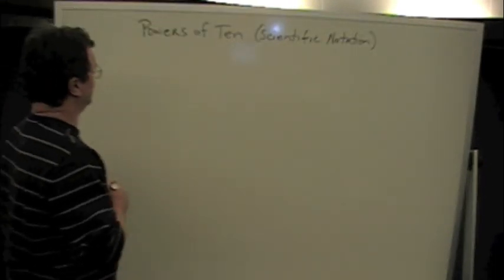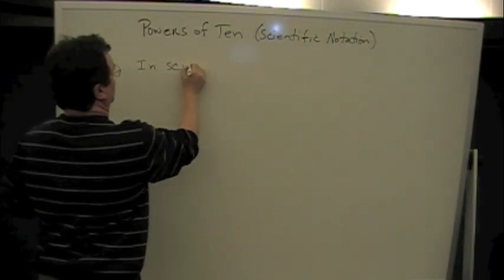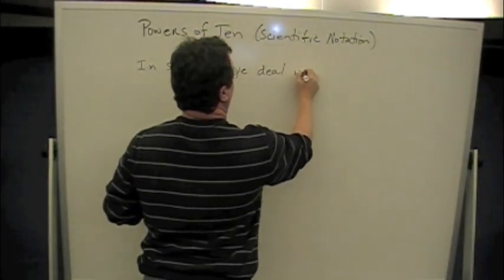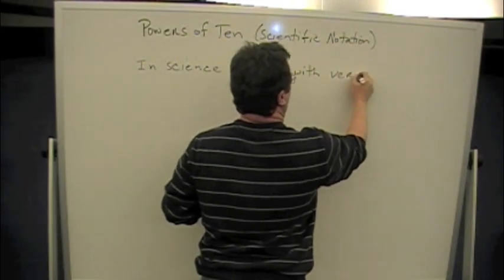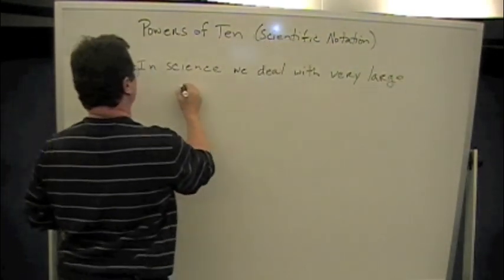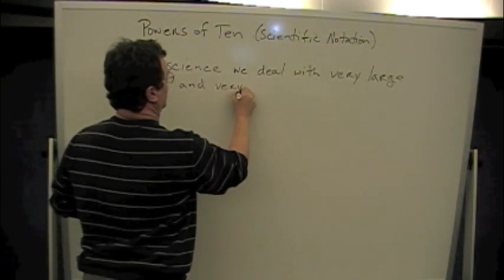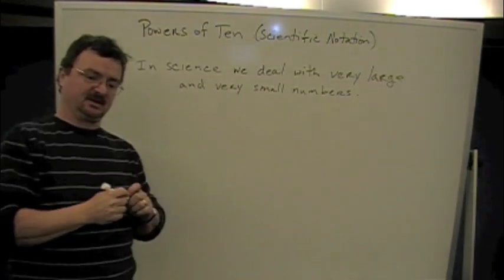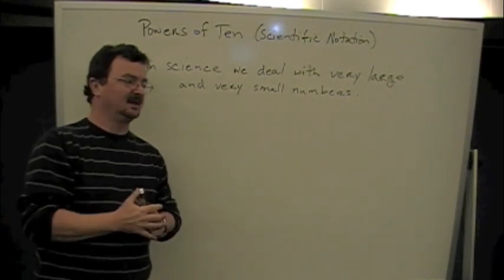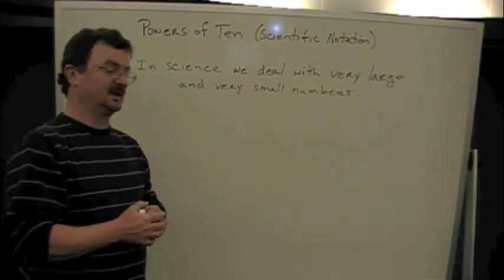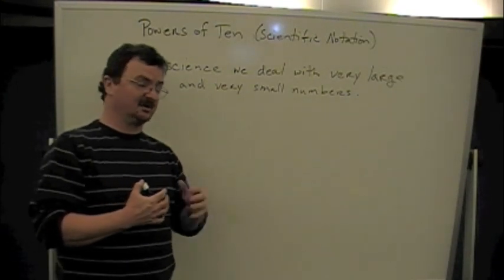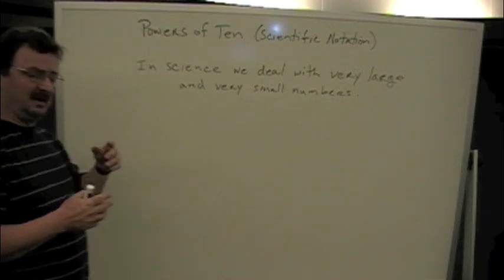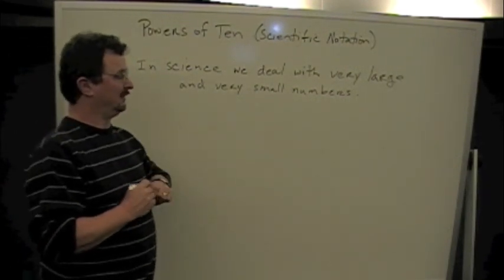Let me give you a justification. In science, we often deal with very large numbers, especially in astronomy, but also very small numbers. In this course, for example, we're going to be dealing with distances to the planets and the size of planets, which are extremely large. Later on, we're going to be talking about distances to stars, but also very small things like the wavelength of light and the size of atoms. To be able to do that, you need a different way to write things. Let me give you an example of why this is important.